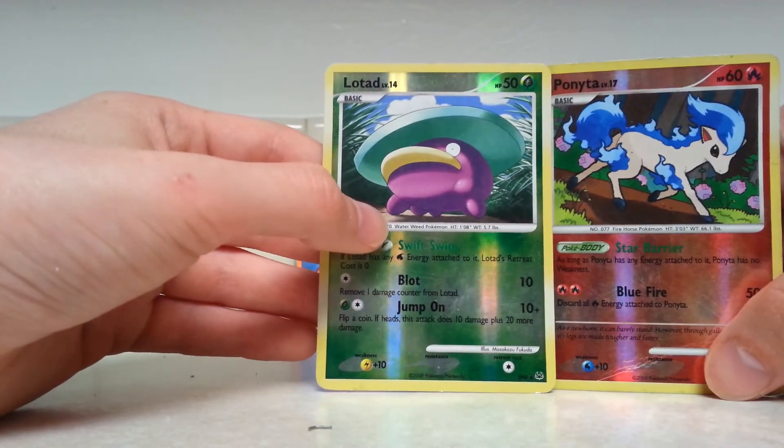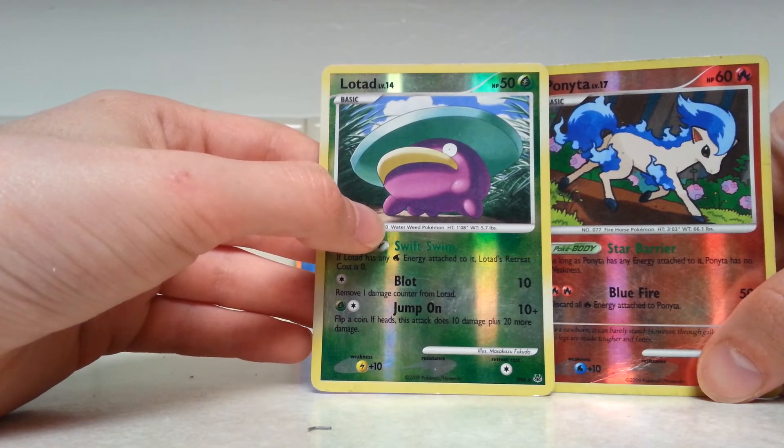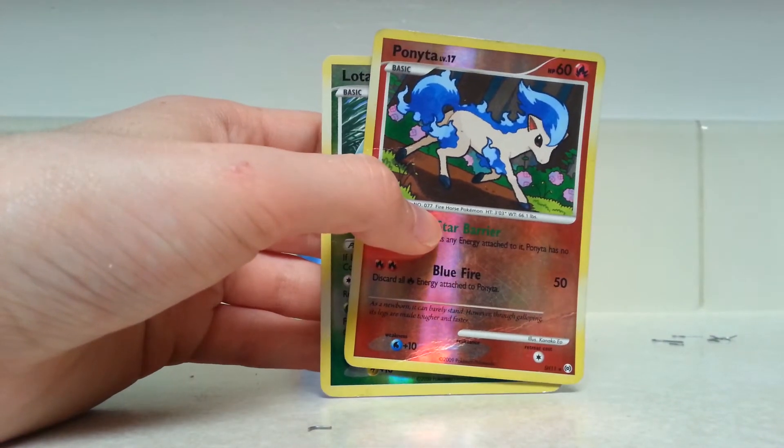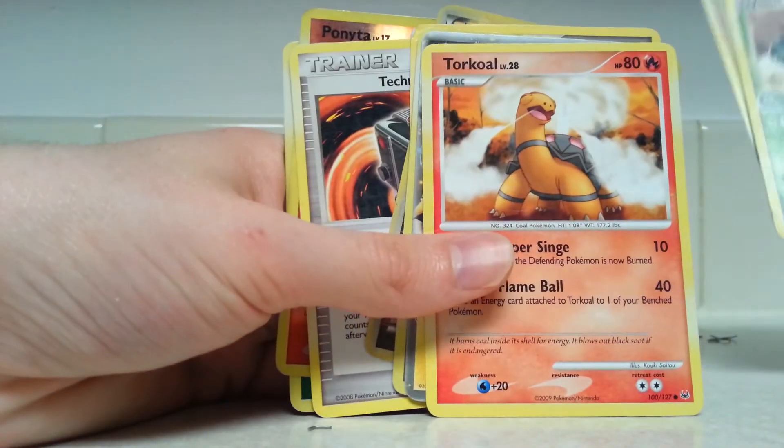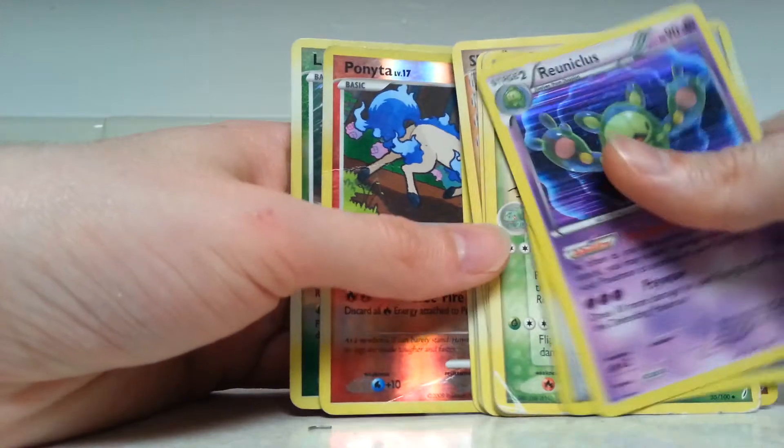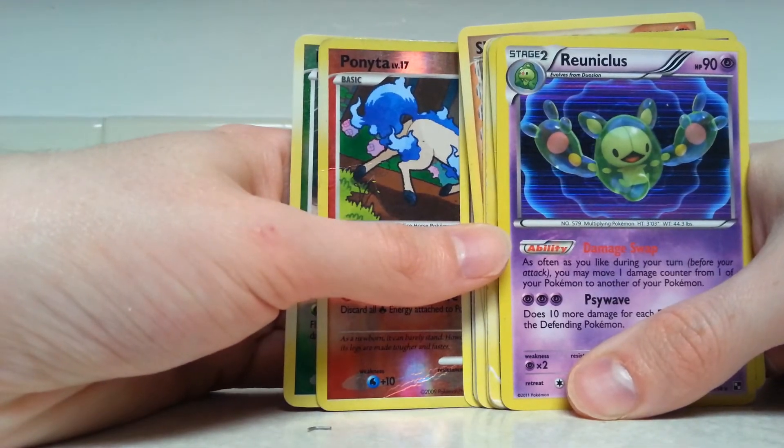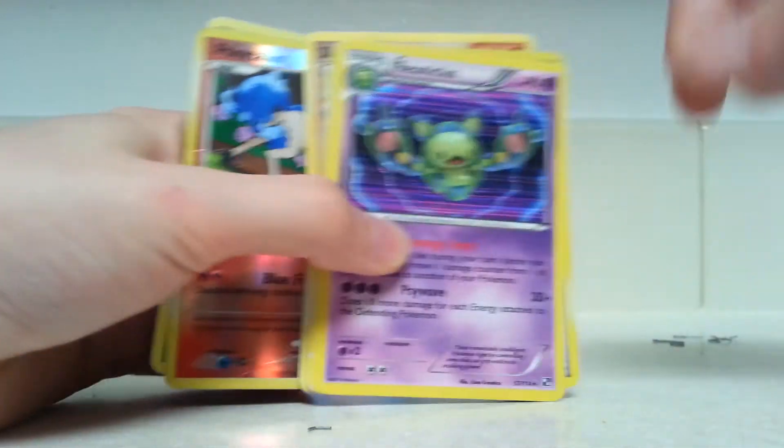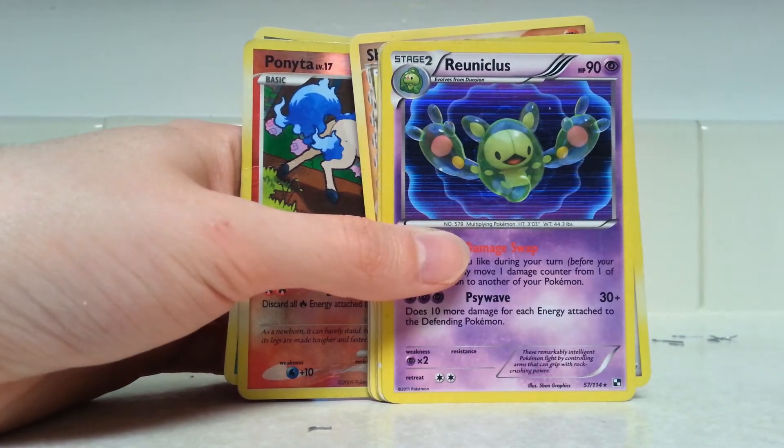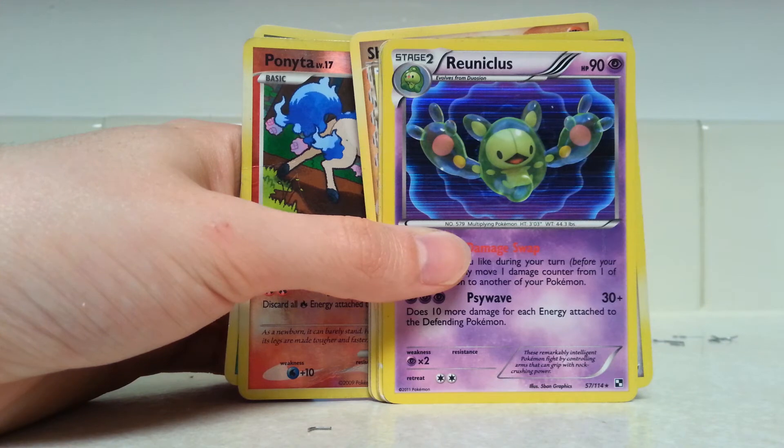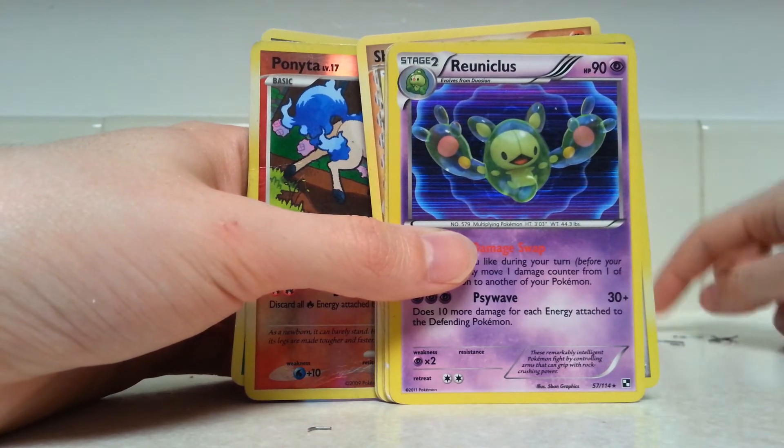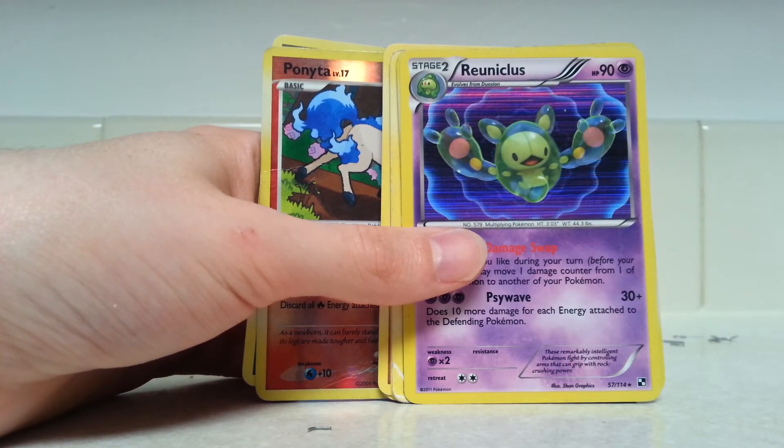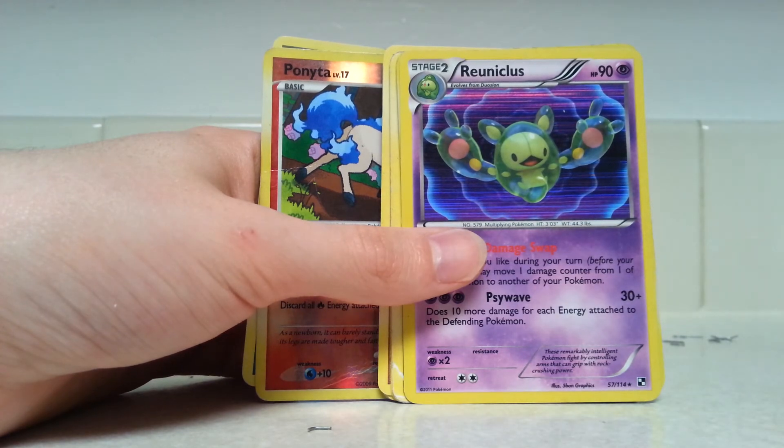I traded an Entei Promo, Blackstar Promo, and a Mew Promo along with the Cyndaquil for Torkoal. And I threw in a... the name is slipping me now of course. Grass holo type. I'll put the name down. It's one of the new XY cards. Shiftry. There we go. I am pretty sure it's Shiftry.